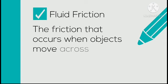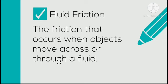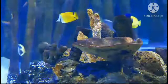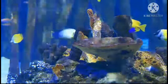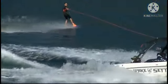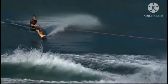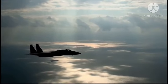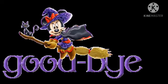Now we have fluid friction — the friction that exists between objects that move through or across water or fluid. Fish have fluid friction as they move through water. Surfing on the surface of the water also produces fluid friction. An object moving through the air also has fluid friction.